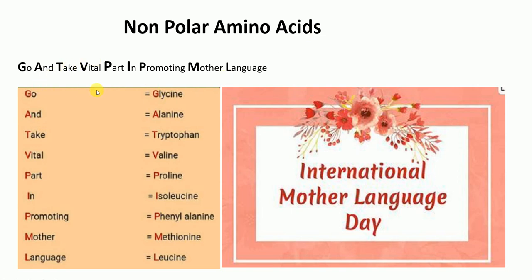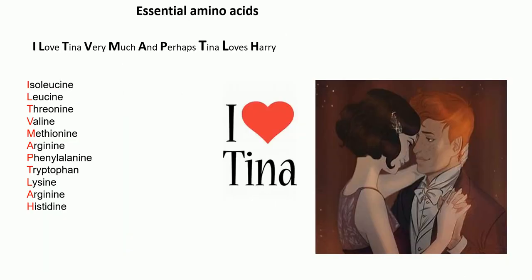To recap the non-polar mnemonic: G-glycine, A-alanine, T-tryptophan, V-valine, P-proline, I-isoleucine, P for promoting that's phenylalanine, M-methionine, and L for leucine. Now moving on to the mnemonic for essential amino acids.